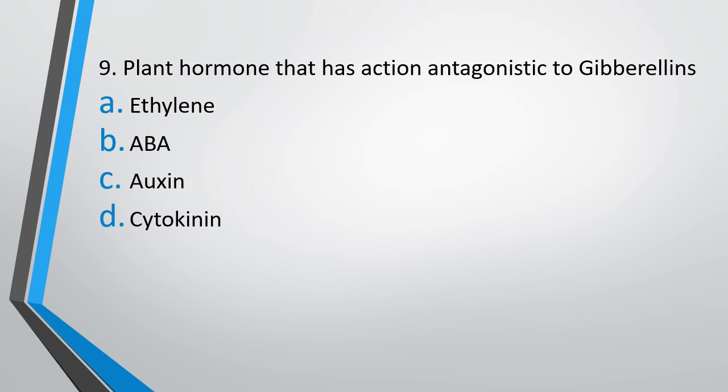Question 9: The plant hormone whose action is antagonistic to gibberellins is — Option A: ethylene, Option B: abscisic acid, Option C: auxin, or Option D: cytokinin. Antagonistic means opposite — whatever gibberellin was carrying out, this hormone carries out the opposite action. The correct answer is Option B, abscisic acid; its actions are antagonistic to gibberellins.